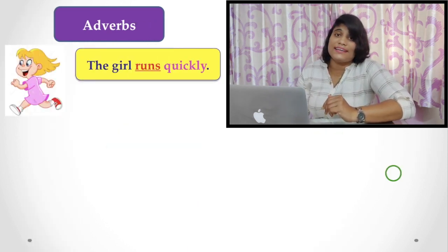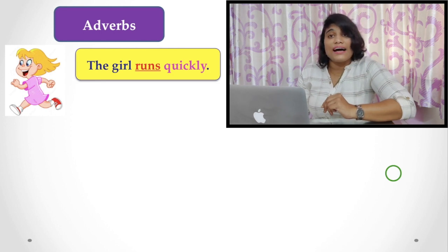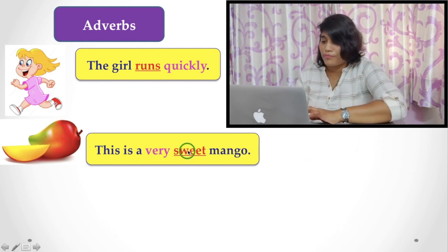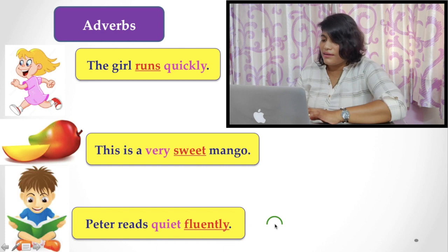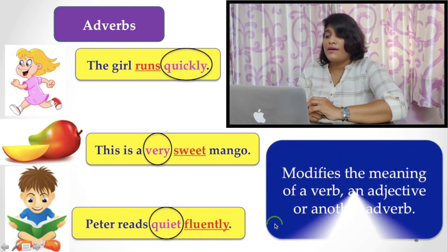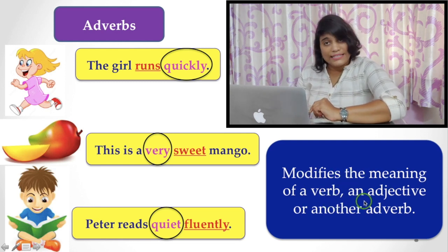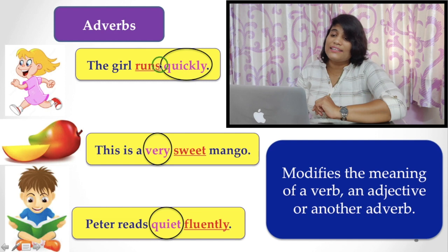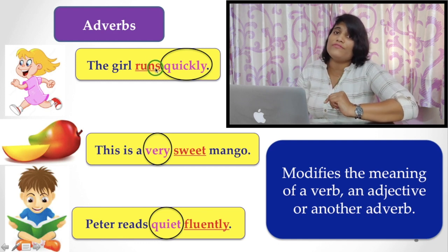Now another thing is there: adverbs. First we read the examples, then I explain. The girl runs quickly. This is a very sweet mango. Next, Peter reads quite fluently. Here you find words like quickly, very, quite. They actually modify the meaning of a verb, an adjective, or another adverb. Let's see. The girl runs quickly - that is, how does the girl run? She is very quick. So it describes or modifies the meaning of the verb runs.